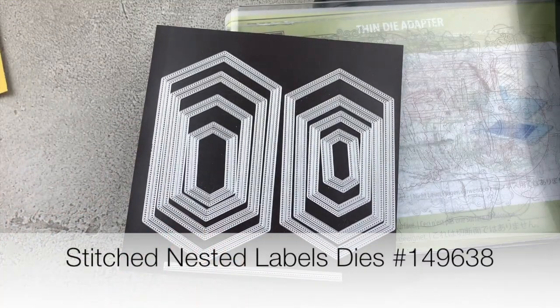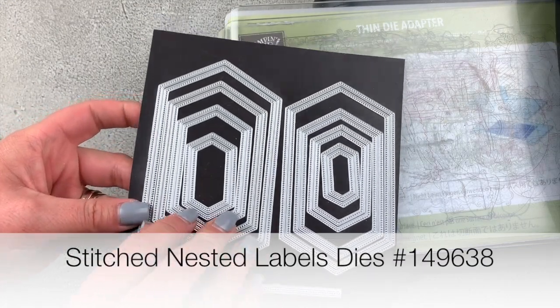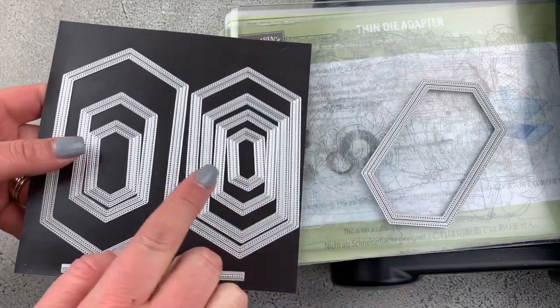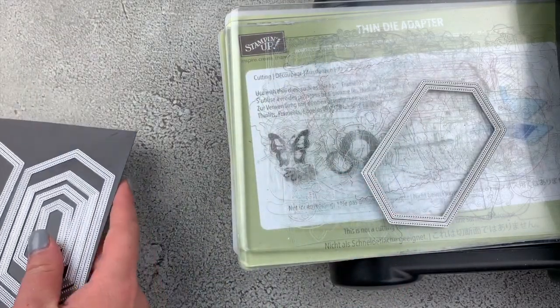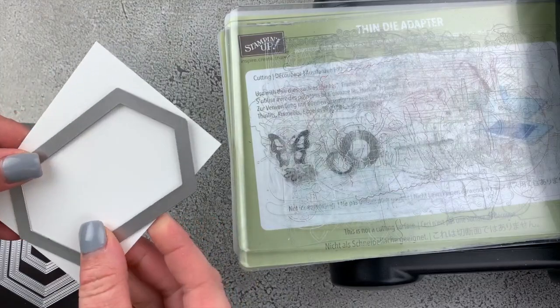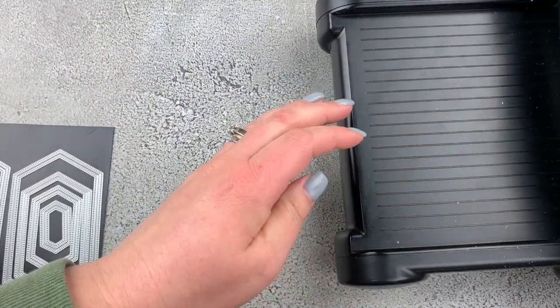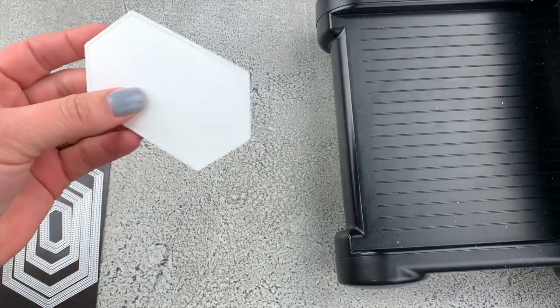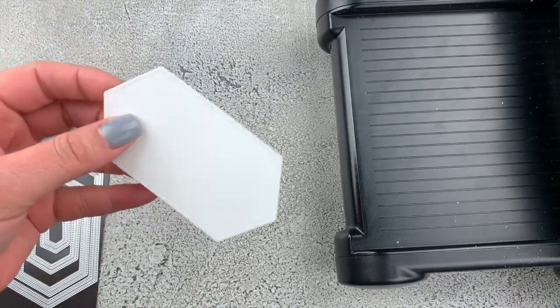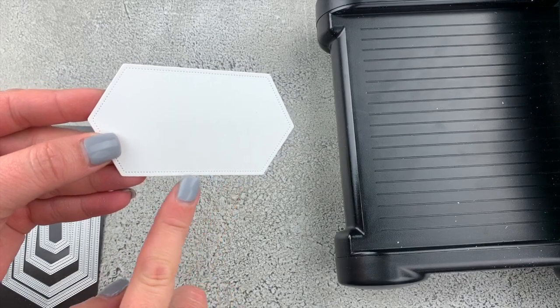I also have my stitched nested labels dies, and I'm going to use the third largest to die cut my piece of Whisper White cardstock. We have a really fun label for our card, and I just love that stitched edge.